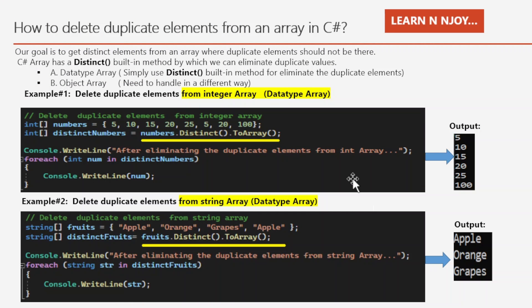How to delete duplicate elements from an array in C-Sharp? Actually, we are not going to delete duplicate elements from an array. Instead, our goal is to get distinct elements from an array where duplicate elements should not be there. C-Sharp array has a distinct built-in method by which we can eliminate duplicate values. There are two types of arrays: data type array and object array. In a data type array we can simply use the distinct built-in method for eliminating duplicate elements.